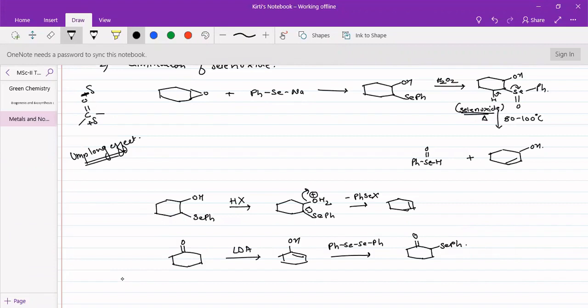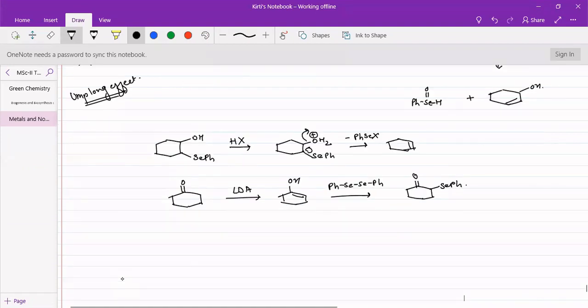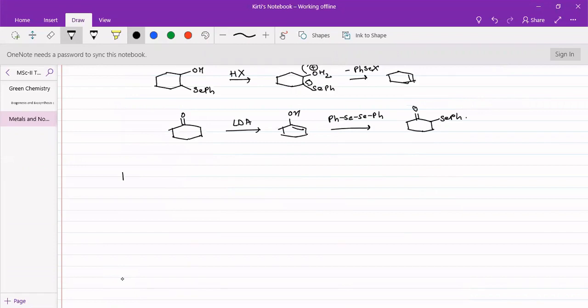Similarly we can undergo different other reactions also with diselenide. Let's see here, lactone is present, trans-lactone. Trans because the two hydrogens here, the two cyclic rings are trans to each other. So LDA followed by diselenide.